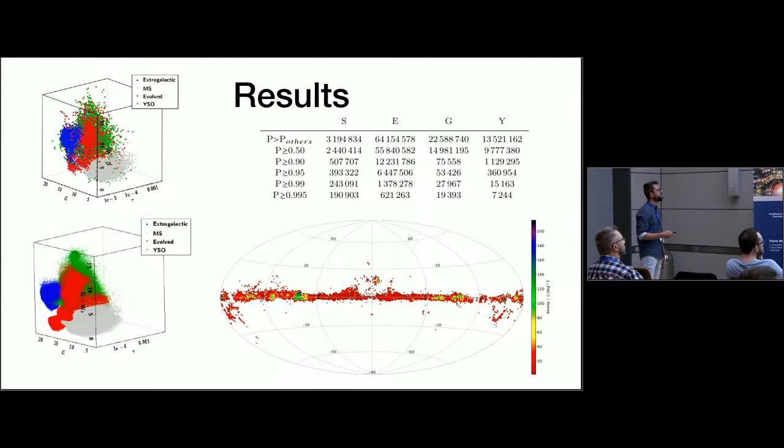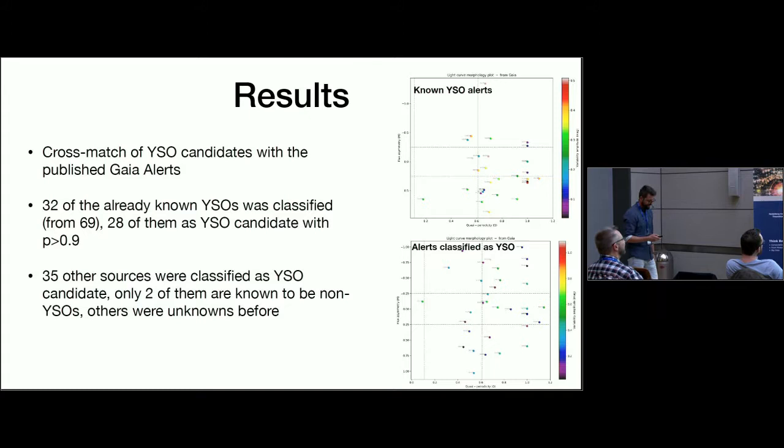That's what we used to find the YSO candidates. I call them candidates because we cannot be 100% sure. This is how the classified ones are distributed in the feature space, quite similar to what we expect. The number I want to show is that the number of objects which were classified as YSO candidates with a probability higher than 0.9 is like 1.1 million. I think it's a reasonable number that we could expect from the lifetime of stars and how long this stellar evolution lasts. This is how they are distributed on the sky. You can recognize the galactic plane and the famous star-forming regions as well.